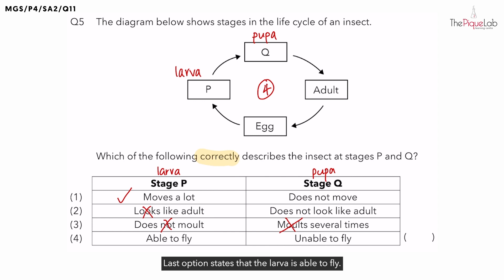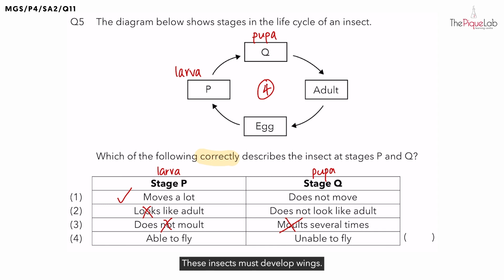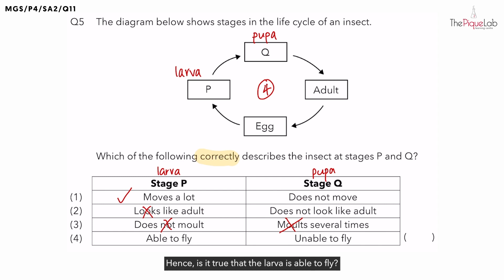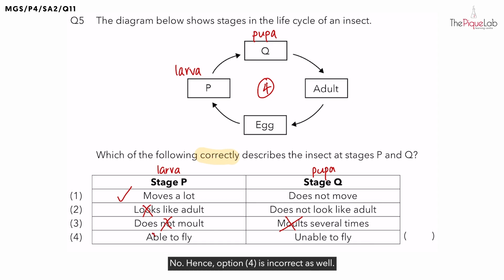The last option states that the larva is able to fly. For insects that can fly, what must they develop to fly? These insects must develop wings. And in which stage of the life cycle do insects develop wings? The adult stage. Hence, is it true that the larva is able to fly? No. Option 4 is incorrect as well.